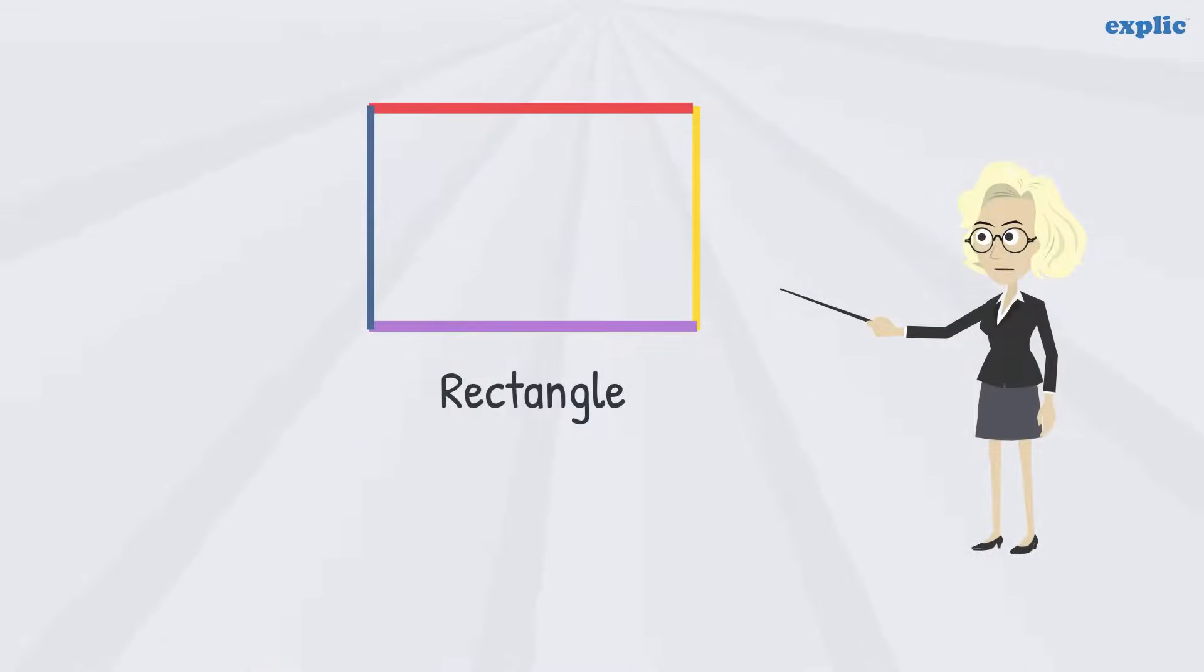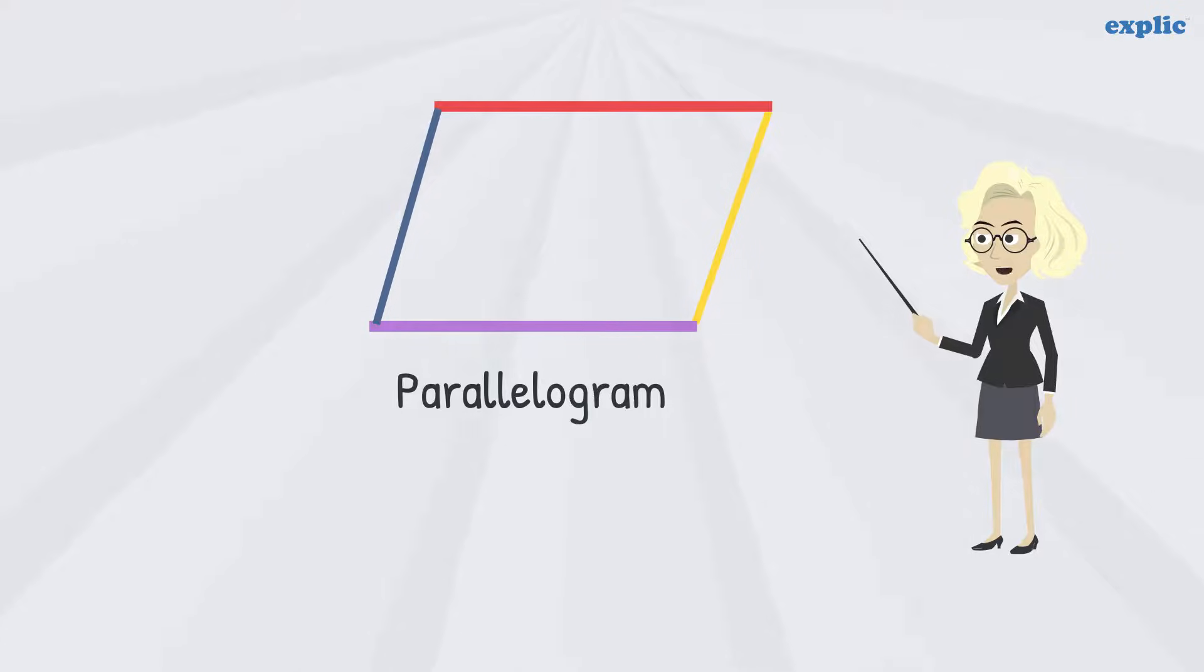So, what is the difference between a rectangle and a parallelogram? The difference is the angle. A rectangle has four 90-degree angles, whereas the parallelogram has two acute and two obtuse angles.